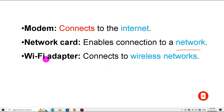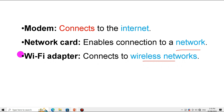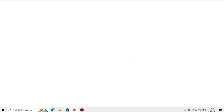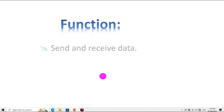The third category is the Wi-Fi adapter, which connects to a wireless network. The fourth category is Bluetooth, which helps connect our device to another nearby device.